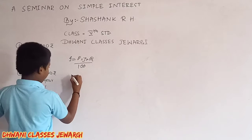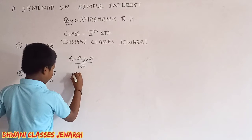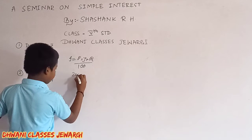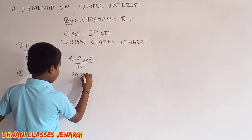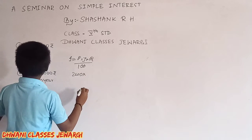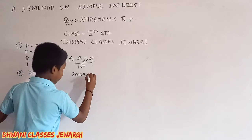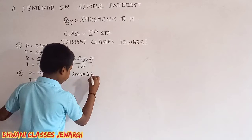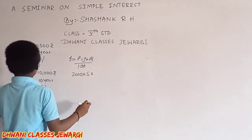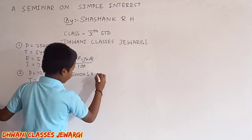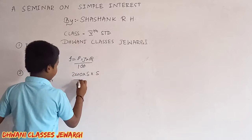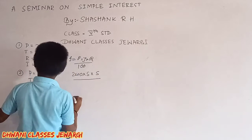P is equal to 2500, T is equal to 5, R is equal to 5, divided by 100.